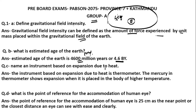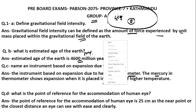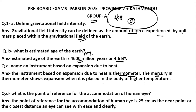Name an instrument based on expansion due to heat. The instrument based on expansion due to heat is a thermometer. The principle is that when heat is applied to a body, expansion occurs. In a mercury thermometer, mercury metal expands when placed in contact with a body of higher temperature, allowing temperature to be measured.